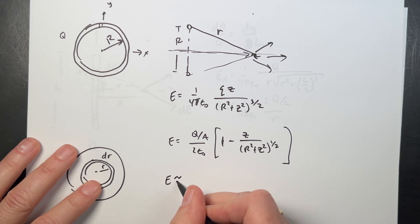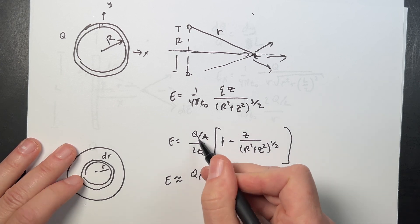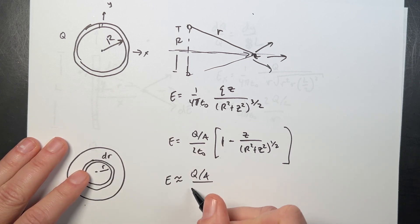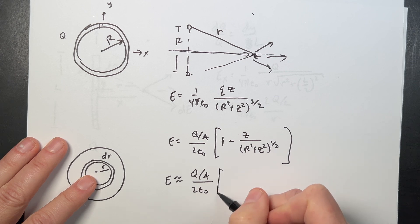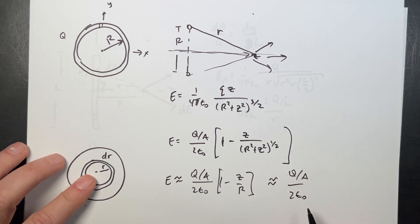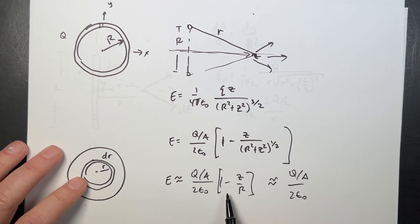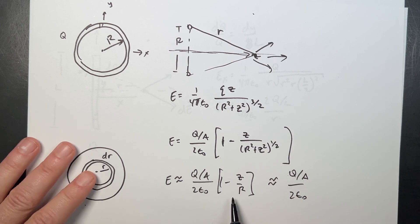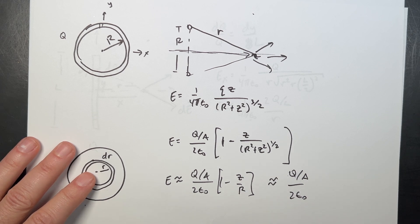If I'm very close to the disk, then I get e is approximately equal to q over a, and a is the area of the whole thing, q over a over 2 epsilon naught, and this is just 1 minus z over r. And then if I get even closer, very very close, it's approximately q over a over 2 epsilon naught. That's pretty important, and actually you can use this one too, because we can use this for another charge distribution that turns out to be really important, and that's a parallel plate capacitor.